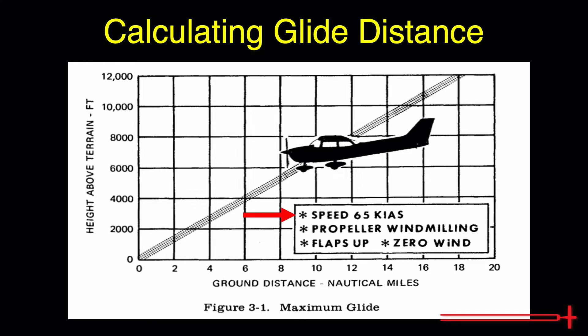While maintaining VG, or best glide speed, with the propeller windmilling, or in other words spinning slowly, typically as a result of airflow, with the flaps up and no wind present, we see that at 2,000 feet we glide roughly 3 nautical miles. Or, in other words, we have a glide ratio of about a mile and a half per 1,000 feet of height above terrain.